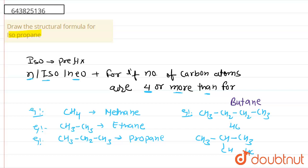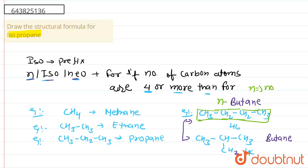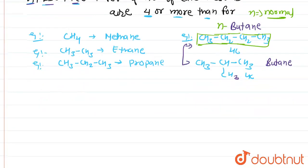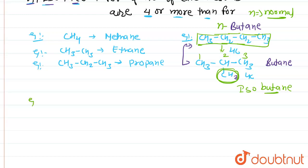This compound also has four carbons, so should it also be called butane? There is some difference in the structure of both compounds. If a straight carbon chain is present, we use 'n,' which stands for normal — meaning the compound is in the form of a straight carbon chain. If there is a CH3 methyl group on the second-last carbon, we use the iso prefix, and the compound is known as isobutane.